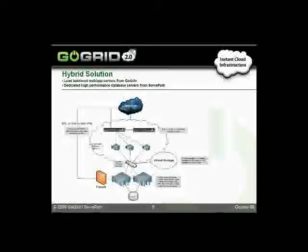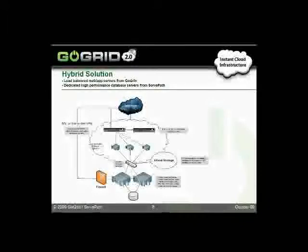This is the background around the unique solution GoGrid delivers for cloud infrastructure, which is part of a service we call Cloud Connect. It's one of the main reasons we can say we are enterprise-ready. It gives customers the ability to combine internet infrastructures — not only dedicated servers, but cloud, as well as co-located servers as well.